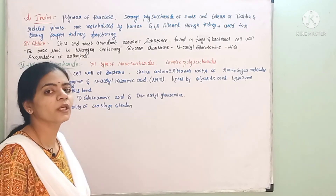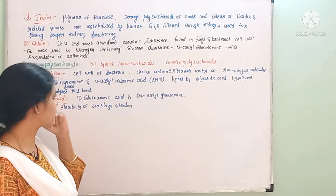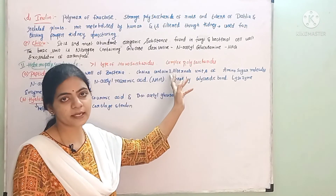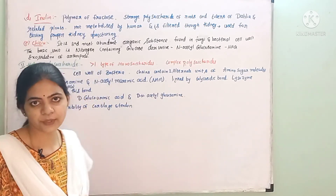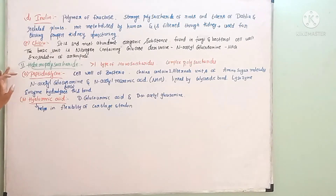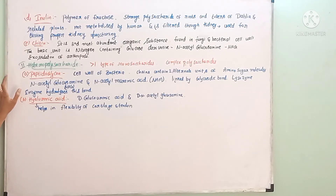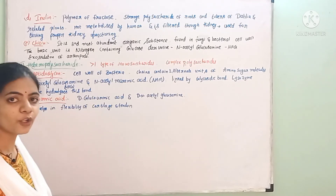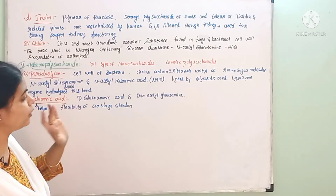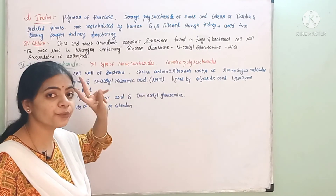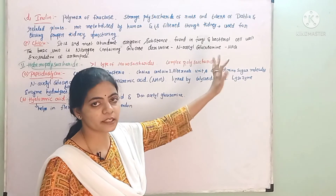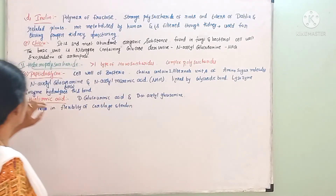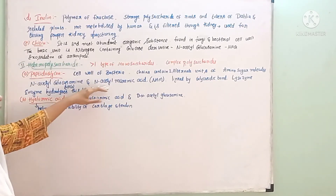Heteropolysaccharides are made up of more than one type of monosaccharide, forming complex polysaccharides. The first important one is peptidoglycan. Peptidoglycan is present in the cell wall of bacteria and contains two alternating amino sugar molecules: N-acetyl glucosamine and N-acetyl muramic acid (NAG and NAM).